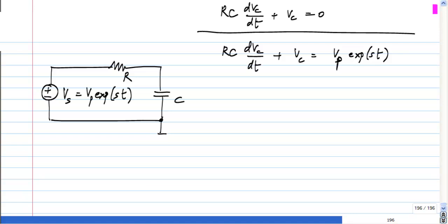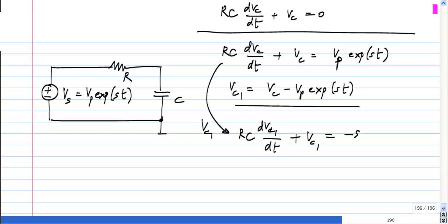First, the simple thing to try to do is rewrite this in terms of Vc1 and compare it to what I derive. We get RC dVc1/dt + Vc1 equals minus SCR Vp exponential st. Simplest thing to do, we did not get a homogeneous equation, so what do we do?